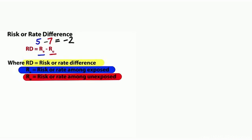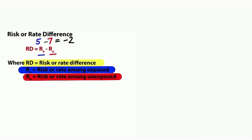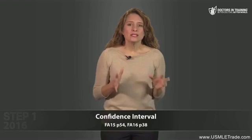What if we calculate a 95% confidence interval and it shows negative 5 to 1? That tells us we're 95% certain the true value of the difference in rates is somewhere between negative 5 and 1. The problem is that confidence interval crosses zero — meaning the true difference could be positive, negative, or zero. If there's no difference, the study intervention didn't affect outcome, and we must accept the null hypothesis: there's no association between the intervention and outcome.